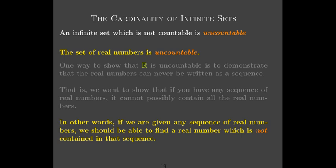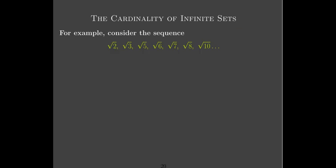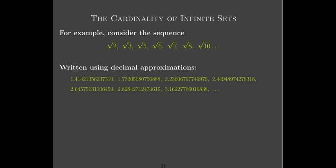So that's what we're going to do. We're going to say: give me any sequence, and I can construct a real number which cannot possibly belong to that sequence. Let's look at an example. We're going to take a sequence — the radicals of the positive integers which are not perfect squares. There are an infinite number of those, and they are all real numbers. They happen to be irrational numbers. We're going to use this sequence of irrational numbers and look at their decimal approximation. These are not the exact values — these are decimal approximations.